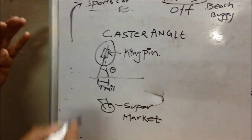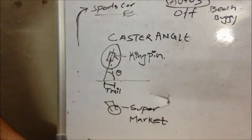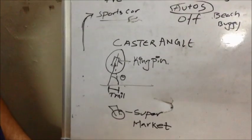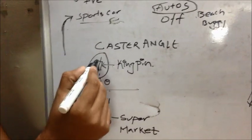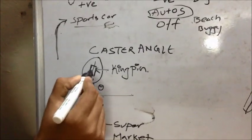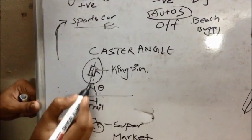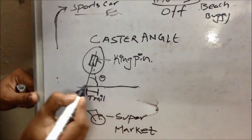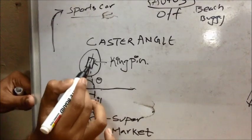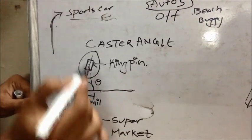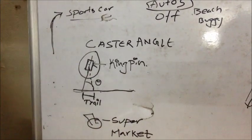Now come to caster angle. So what is caster angle? I think you all know about the kingpin. What is kingpin? First of all, kingpin is the part which is attached to the tire. And this kingpin is making an angle theta with the horizontal. This is a horizontal line. This is the kingpin. This is making an angle theta with this. That angle is called kingpin.